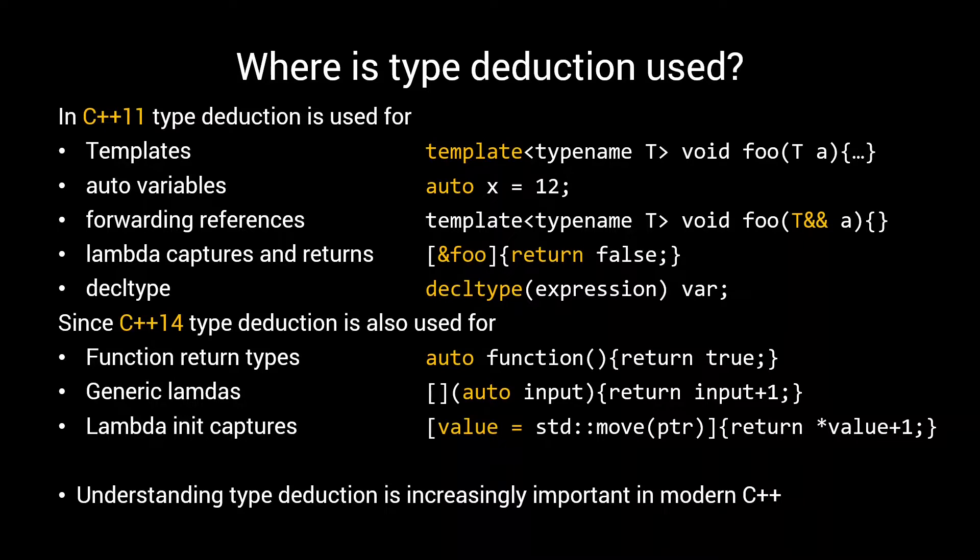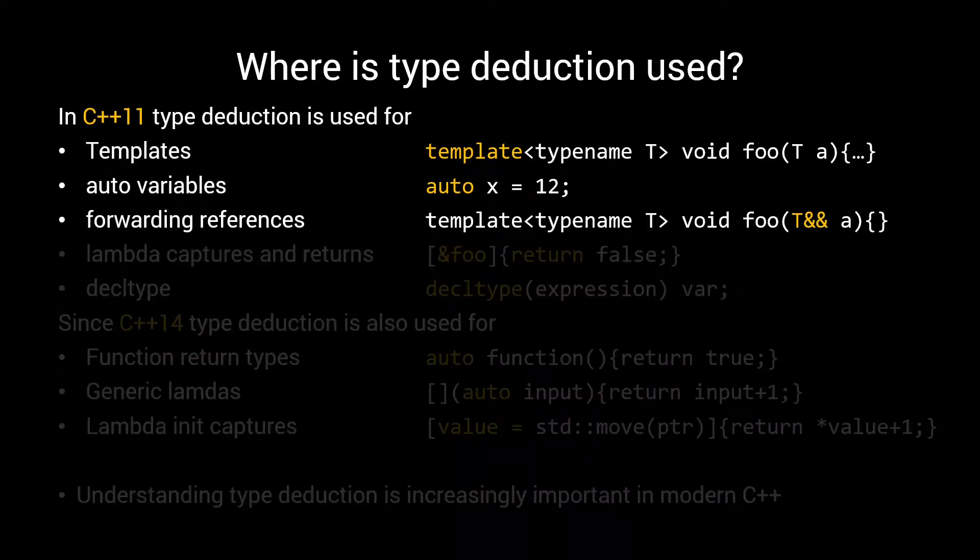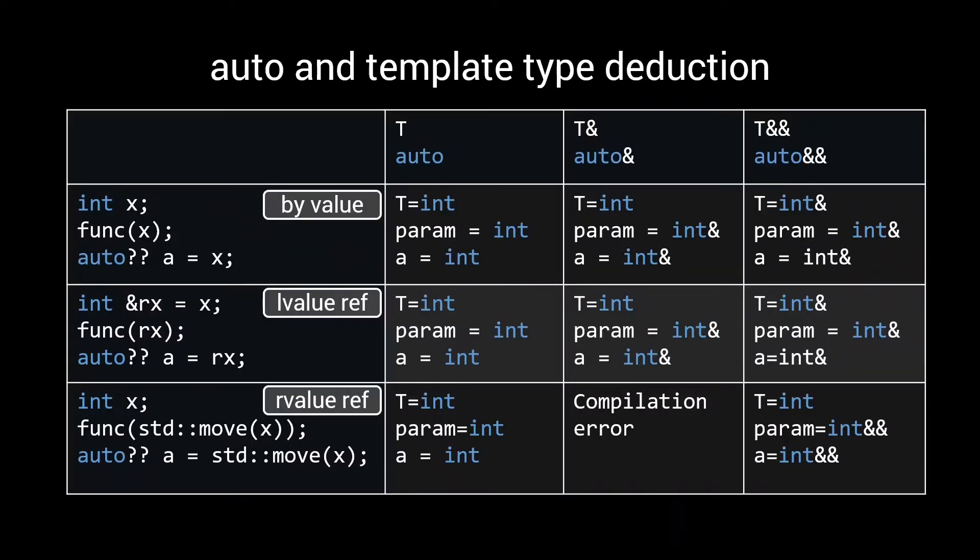In that video we talked about the two big ones, template and auto-type deduction. And in doing so we also discussed the rules of forwarding references. We created this table which shows what your T, your parameter type or your auto-variable is deduced to with different types of input expressions.